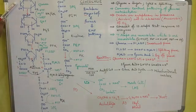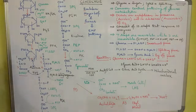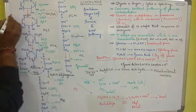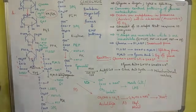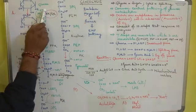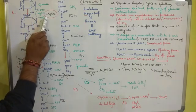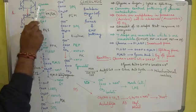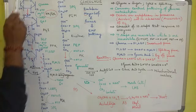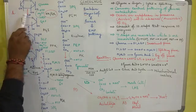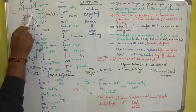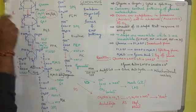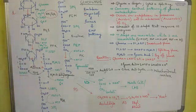The first substrate is glucose, which is converted into glucose 6-phosphate by the enzyme hexokinase or glucokinase. This is the first step of glycolysis. Here phosphorylation occurs, and the phosphate group comes from the hydrolysis of ATP. ATP is converted into ADP, and the phosphate group is attached at the 6th carbon position of glucose, converting CH2OH into CH2OP.